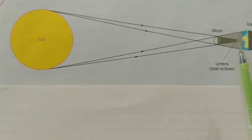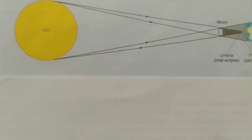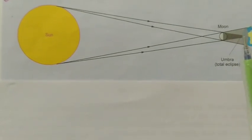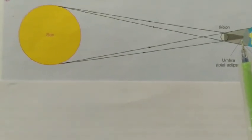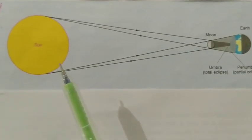The people at this position cannot see the sun because the moon's shadow falls on this area, therefore we call it solar eclipse.